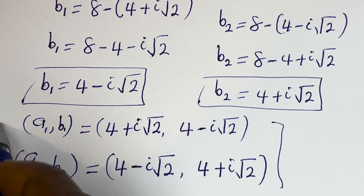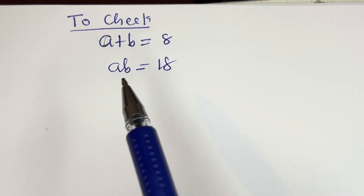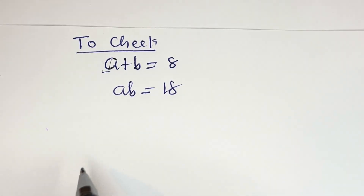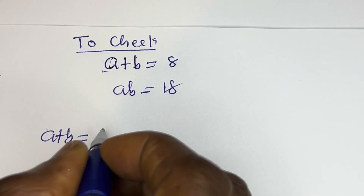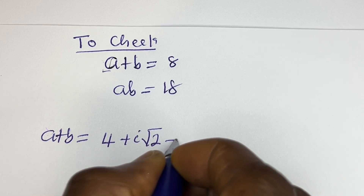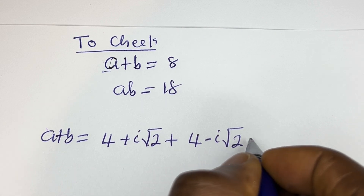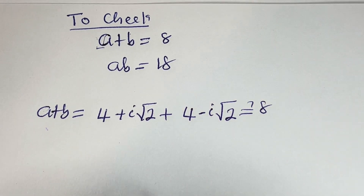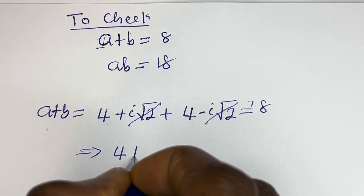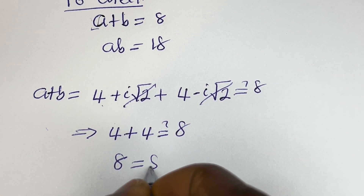Let's check to confirm the answer is correct. Using the given equations a plus b equals 8 and ab equals 18, we use a₁ and b₁. For a plus b: (4 plus i√2) plus (4 minus i√2) equals 8. This gives 4 plus 4 equals 8, which is true.